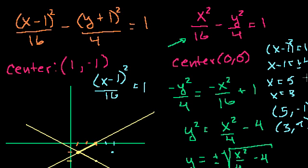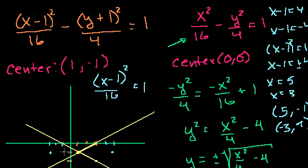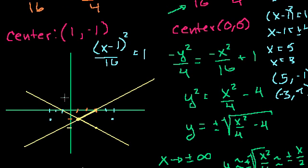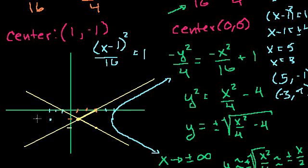Plotting those two points — 5, negative 1 and negative 3, negative 1 — our intuition is confirmed: the curve is always slightly below the positive asymptote. The hyperbola curves through these points and gets closer and closer to the asymptotes in all directions, approaching but never reaching them as they extend forever.